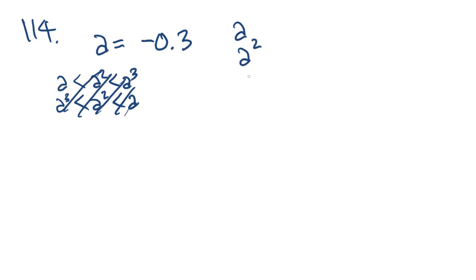Number 114. If a equals negative 0.3, which of the following is true? They have a bunch of different answers where it's like a is smaller than a squared, smaller than a cubed, or a cubed smaller than a squared, smaller than a, etc. Basically we need to figure out a, a squared, and a cubed, and figure out what's the biggest and what's the smallest.